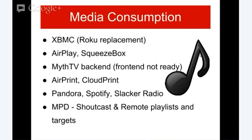AirPlay — for those who own an Apple device, you can set up the appropriate bits of Python and GStreamer and stream right to your Pi, hook it up to your TV or audio, and play your iTunes, YouTube, et cetera. Again, the MythTV back-end is an option — the front-end is not ready but I covered that earlier. Another nifty piece is AirPrint and Cloud Print. With AirPrint, you install CUPS (the Unix printing subsystem), configure it, and then a Python script talks to it so you can print right from your phone or tablet.